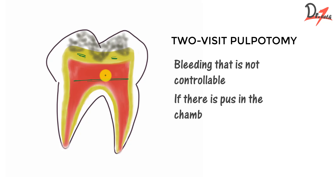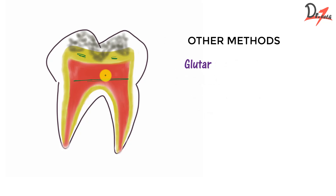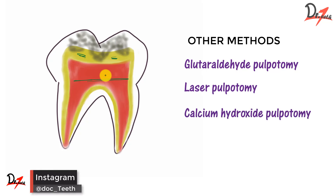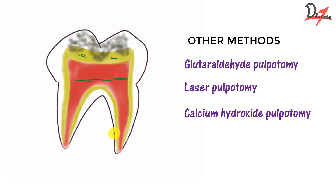There are other methods like glutaraldehyde pulpotomy and laser pulpotomy. We also have calcium hydroxide pulpotomy, which is usually done when we want to preserve the vitality of the radicular pulp and allow normal closure of the root. Here, we remove the coronal pulp, arrest the bleeding, apply calcium hydroxide to the area, and place a temporary restorative material above it. On recall, if the patient is asymptomatic and a secondary dentine bridge has formed on the radiograph, the permanent restoration can be done. MTA can also be used successfully as a pulpotomy agent.